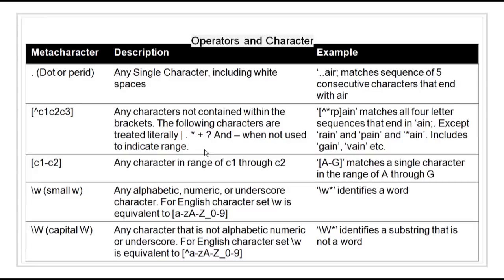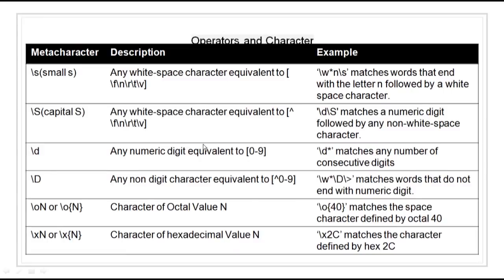In this table we can clearly see the meta character, the description of it, and the example. We have a dot or period that means any single character including white spaces. Then we have [^c1,c2,c3] that means any character not contained within the bracket — for example, [^rnp] matches all four-letter sequences ending in 'ain' except 'rain' and 'pain'. We also have range c1 to c2 for any character in that range, \s for any whitespace, \d for any numeric digit equivalent to 0-9, and \D for any non-digit character.